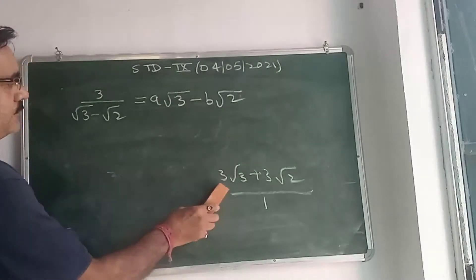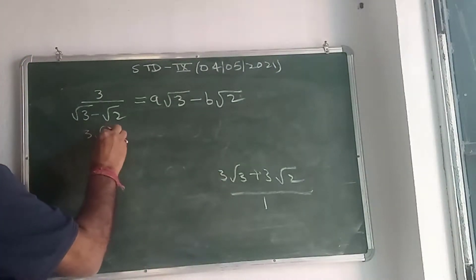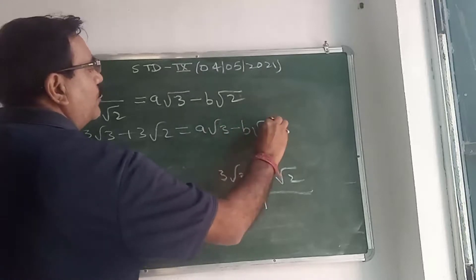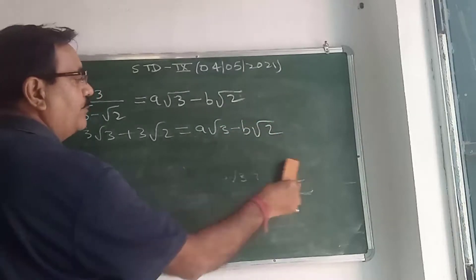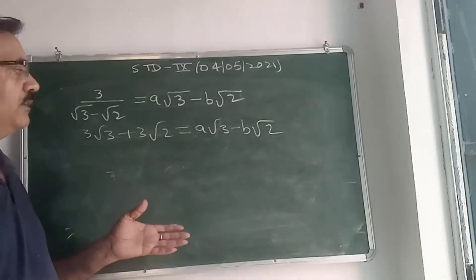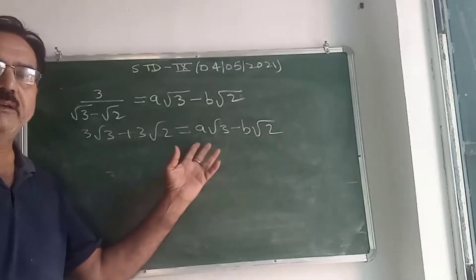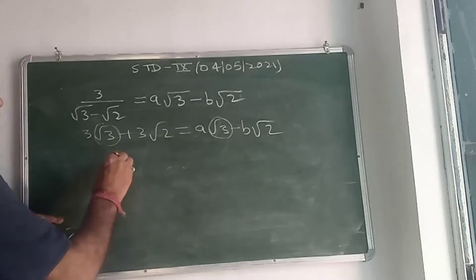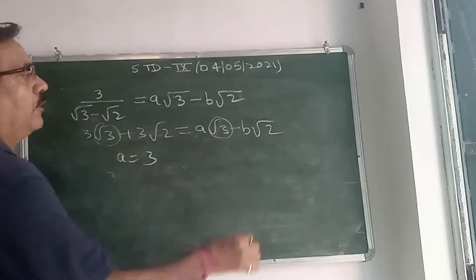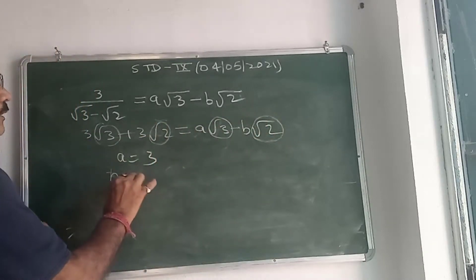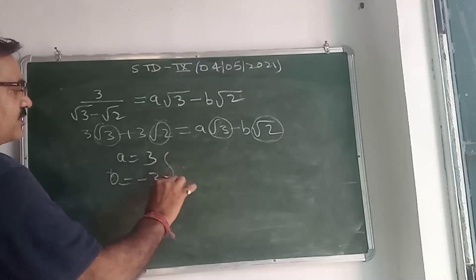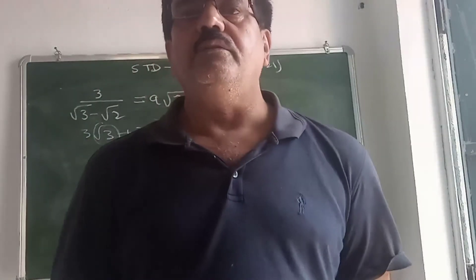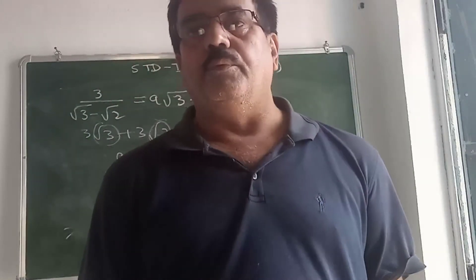Now, the right-hand side is given as A√3 + B√2. Since the equal sign means left-hand side and right-hand side are the same, we compare coefficients. The coefficient of √3 on the left is 3, so A = 3. The coefficient of √2 on the left is 3, but there is a minus sign on the right-hand side, so B = −3. That is our answer. Some more questions I will solve in the next video. Until then, solve question numbers 3 and 4. Thank you.